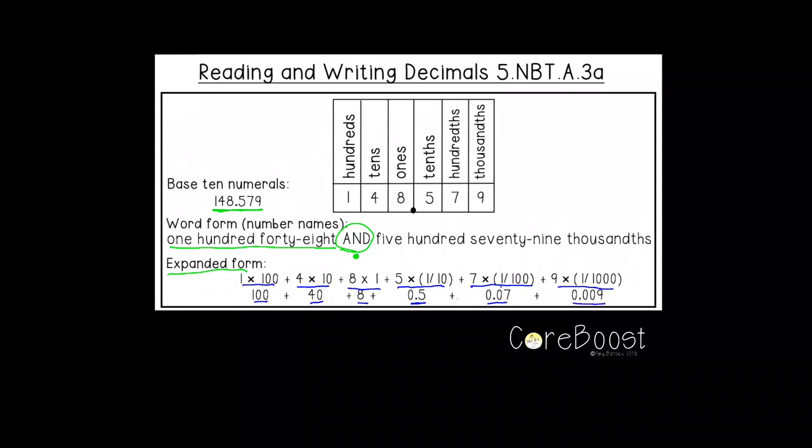So if I take all these expanded pieces and put them back together, I'll show you how it goes back to look just like the base 10 numeral. So if I take 100 plus 40 plus 8 plus 5 tenths plus 7 hundredths, plus 9 thousandths.